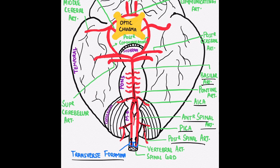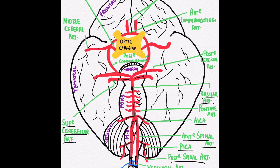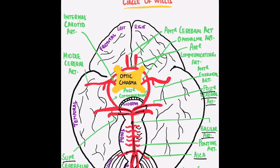As the basilar artery lies on the pons, it gives off several pontine arteries. Then at the level of the midbrain, it gives the superior cerebellar artery, which supplies the topmost area of the cerebellum. This basilar artery then bifurcates into the posterior cerebral arteries, which form the posterior portion of the Circle of Willis.